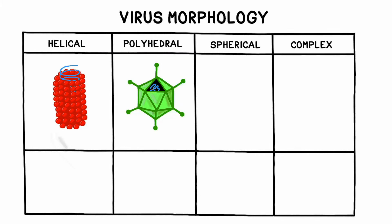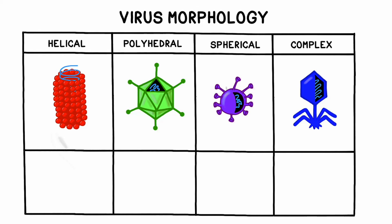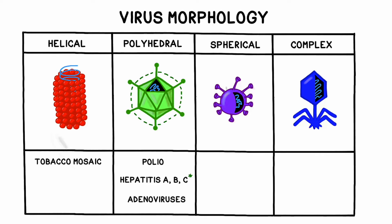This table shows several common viral shapes along with a few examples. Helical viruses include the tobacco mosaic virus, which was one of the first to be studied extensively because its effects were so easy to observe. Polyhedral viruses include polio, hepatitis A, B, and C, and adenoviruses. Some polyhedral viruses, such as hepatitis C, have what's known as an envelope surrounding its exterior. Spherical viruses are round and can sometimes have protein spikes protruding outwards. These include HIV, influenza, and the novel coronavirus SARS-CoV-2. Complex viruses are those that don't fit into any of the other categories, and they look kind of like a lunar lander. A great example is the T4 bacteriophage.